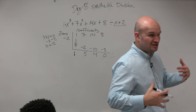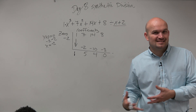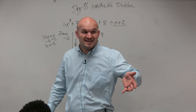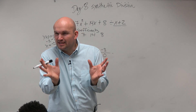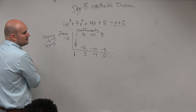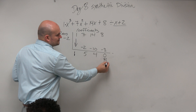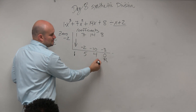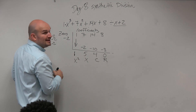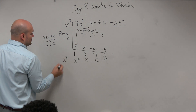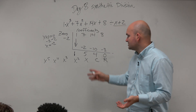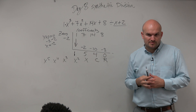Remember, synthetic division is just a tool — we have to make sense of what we get. It's faster than long division, but we need to interpret the answer. The last number is our remainder. The second to last is our constant. The next is the coefficient of our linear term, and the next is the coefficient of our quadratic term. Additional numbers would represent coefficients of higher powers. We only go up to x squared here.